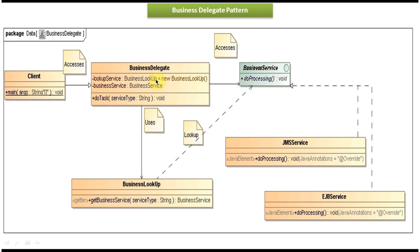The business delegate uses the lookup service to get the business service object. Once it gets the business service object, it will access the method of that object, which is performed by the do task method. The do task method has a parameter for service type, so you pass the type of service you want to access — it can be EJB or JMS in this example.